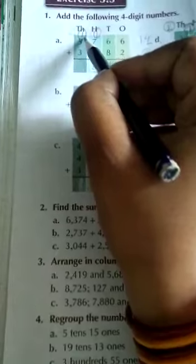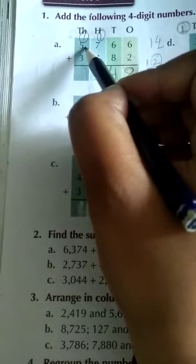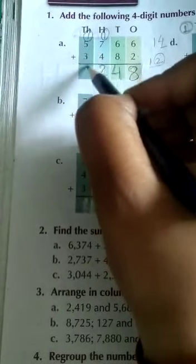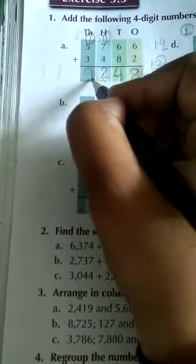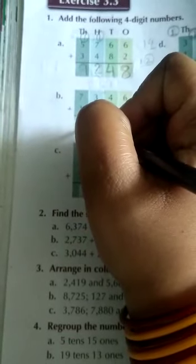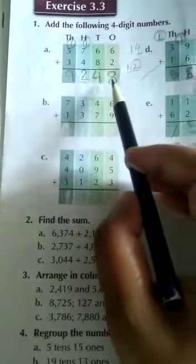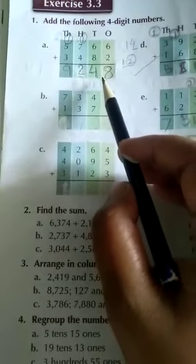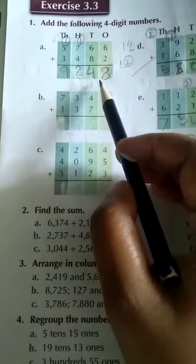And 1 will be forwarded to the thousands place. Now you see, 1 plus 5 is 6, and 6 plus 3 is 9. Is it clear to you, students? I hope it is understandable for you.